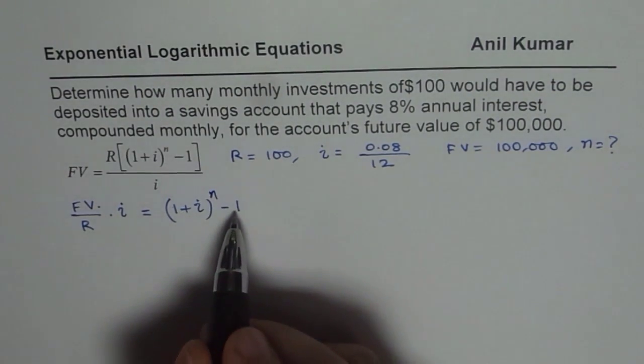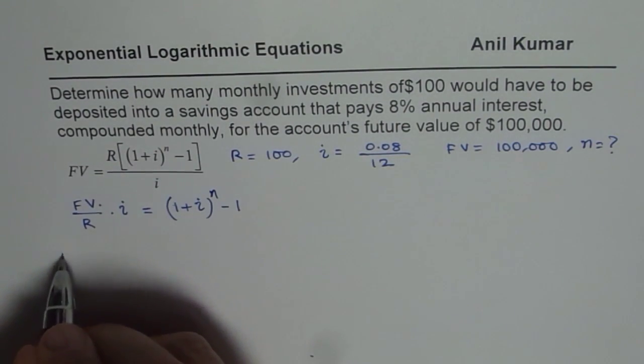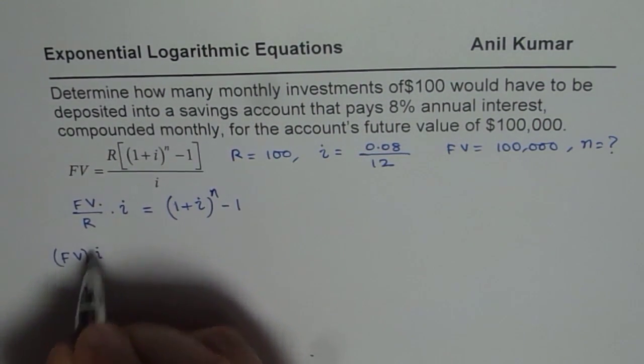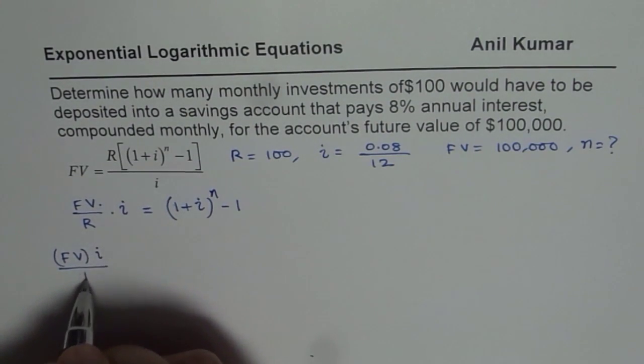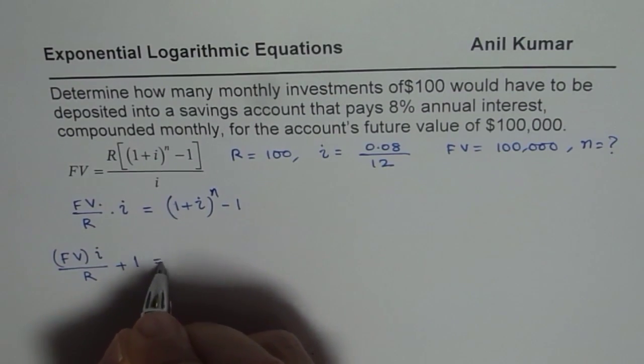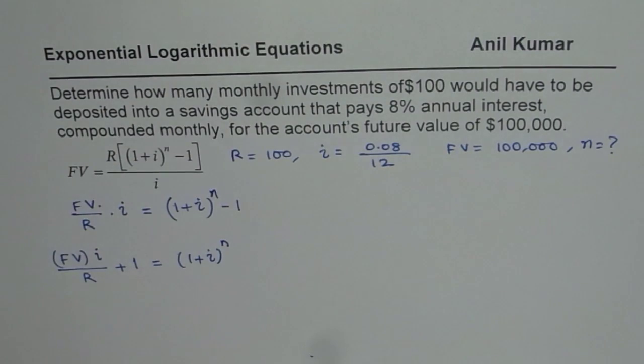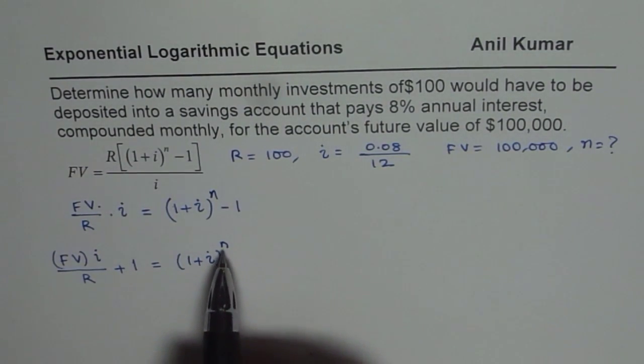The next step is to add 1 to this. So we have FV times i divided by R plus 1 equals (1+i)^n. Now the difficulty is to isolate N.